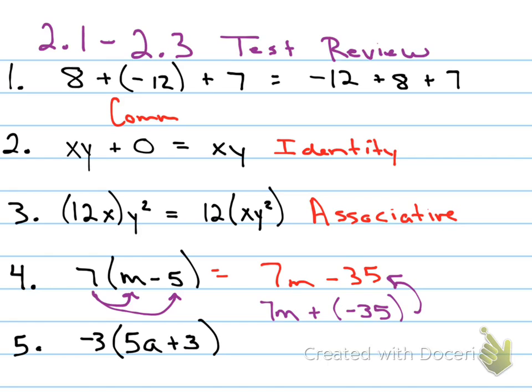What about number five? John and Dad? Negative 15A minus 9. Or they could have said negative 15A plus negative 9. That would be fine, too. All right? So writing an equivalent variable expression.